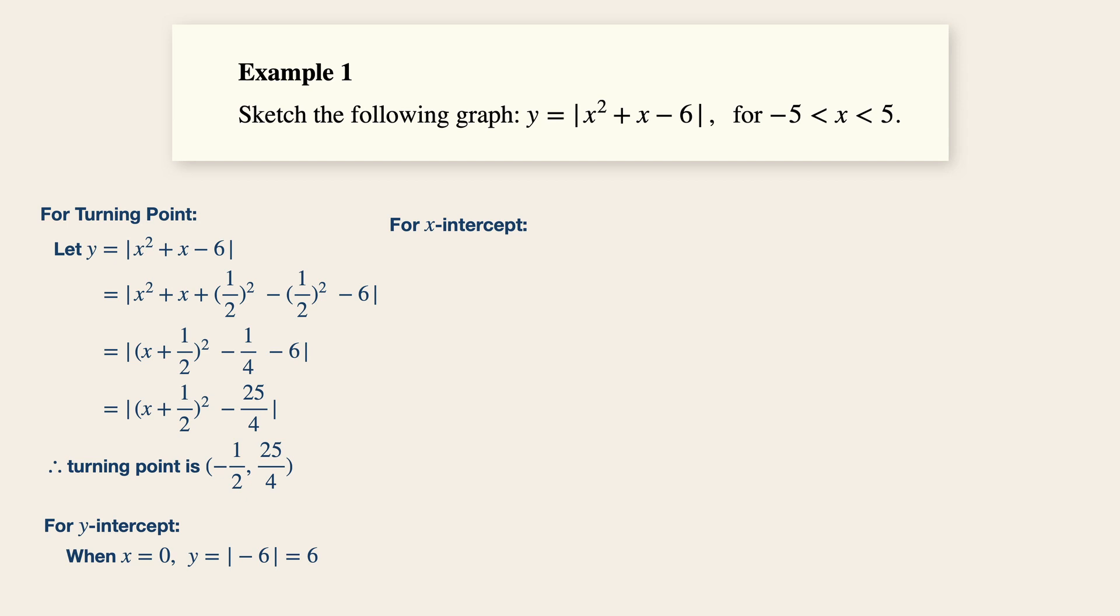Next, we need to find the x-intercept. So when y is equals to 0, x plus half squared is equals to 25 over 4. Now, this gives two values.